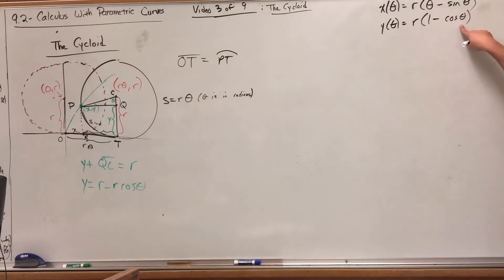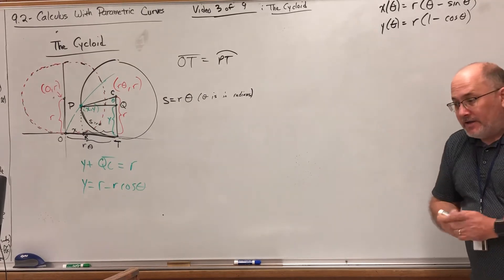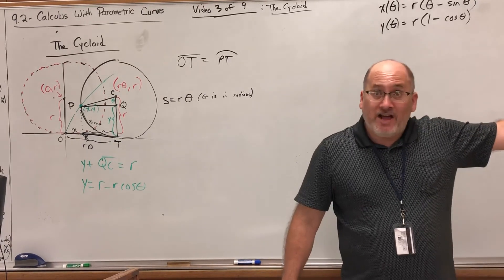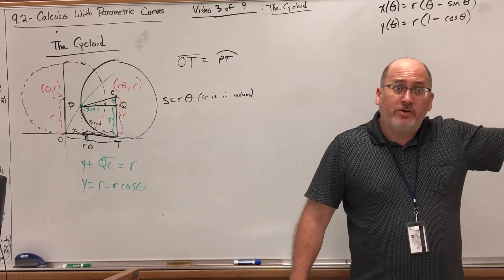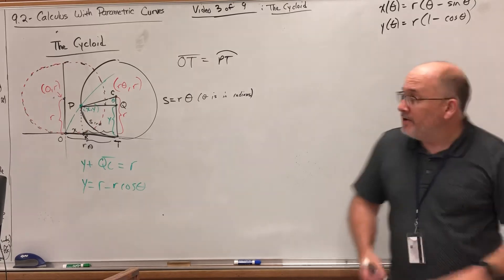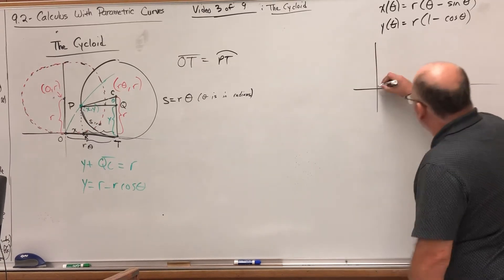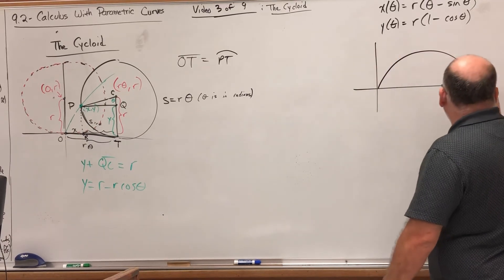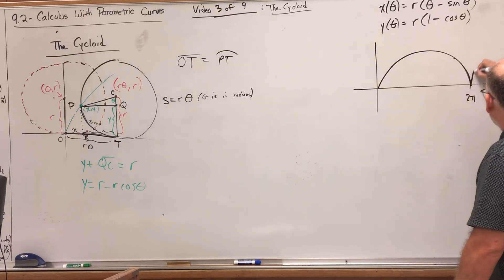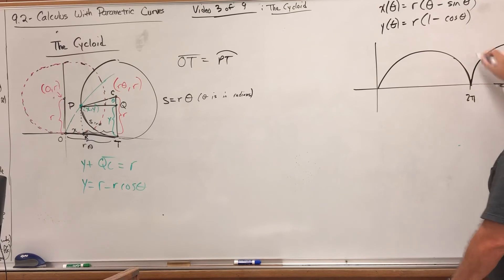But how long does it take for this to hit the ground again? That's like asking what's the next value of theta that makes the y-coordinate equal to zero. Cosine has a period of two pi, and the only place on the unit circle where cosine is one is on the right side. So if we start at theta equals zero and make a complete revolution, we're not over here again until two pi.